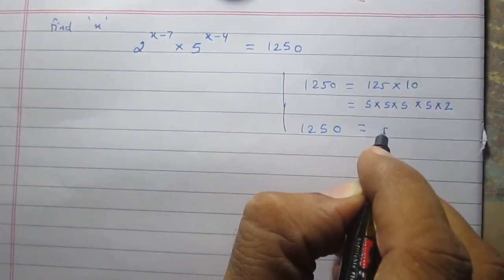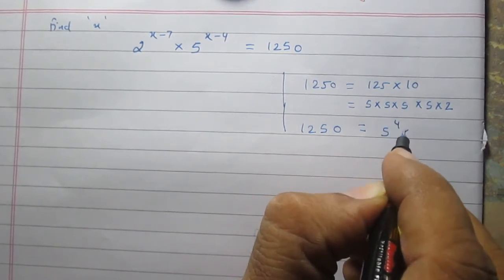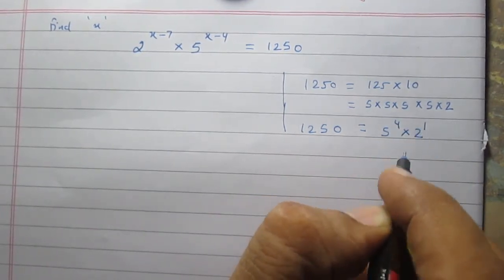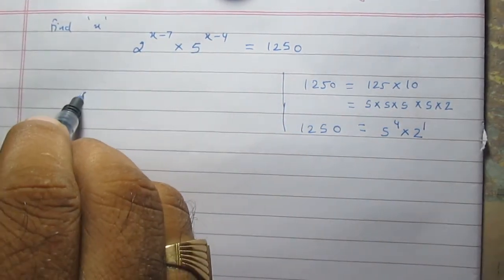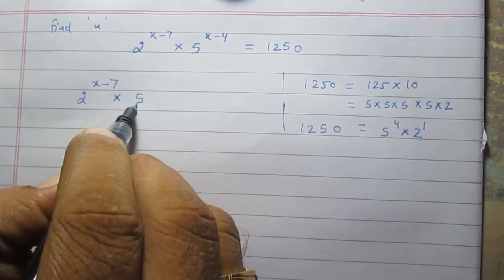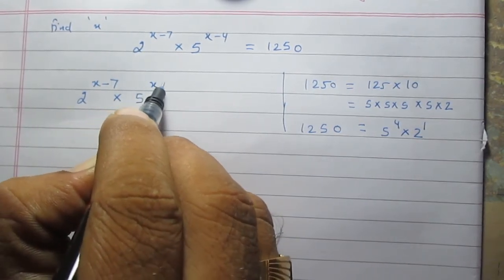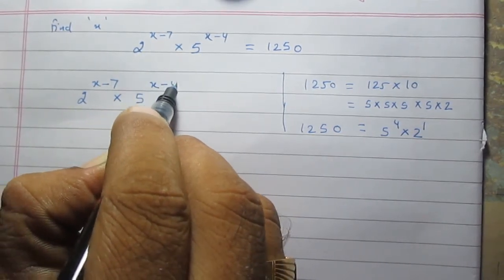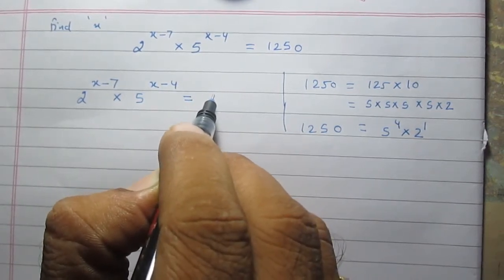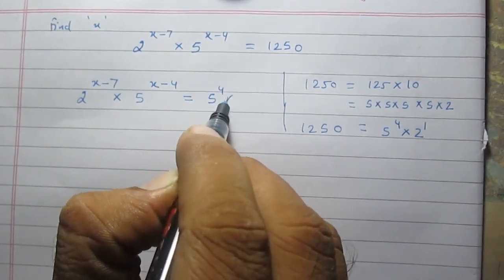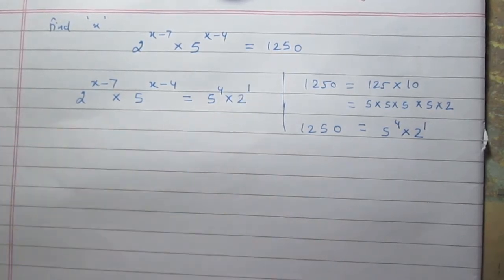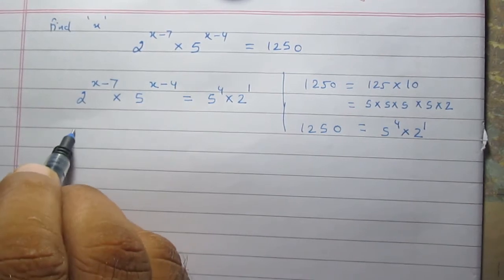...is equal to 5 raised to the power 4 multiplied by 2 raised to the power 1. So the left-hand side is 2^(x-7) multiplied by 5^(x-4), and the right-hand side is 1250, which equals 5^4 multiplied by 2^1.